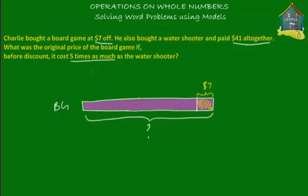We can also put the cost of the water shooter in the model. We know that the original price of the board game was five times as much as the water shooter. So we divide the entire purple block into five parts, and one of those parts is the cost of the water shooter. The entire question mark is divided into five parts — one, two, three, four, and five — with the fifth unit overlapping the shaded yellow discount portion, since the original price is inclusive of that shaded part.